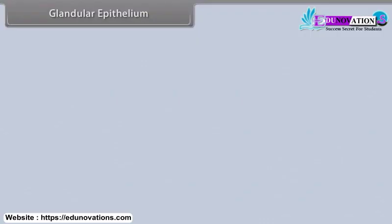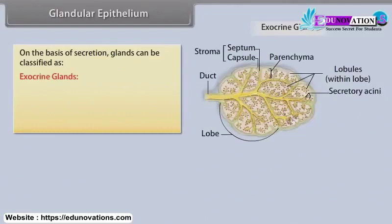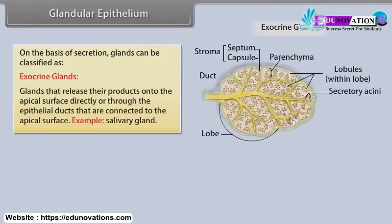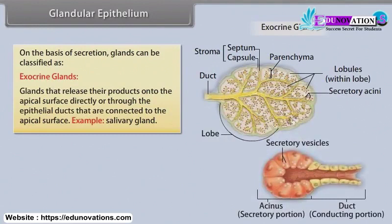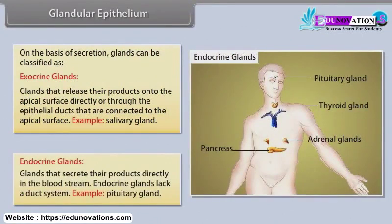Glandular epithelium. On the basis of secretion, glands can be classified as exocrine glands — glands that release their products onto the apical surface directly or through epithelial ducts connected to the apical surface, for example salivary glands — and endocrine glands — glands that secrete their products directly into the bloodstream and lack a duct system, for example the pituitary gland.